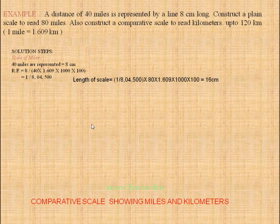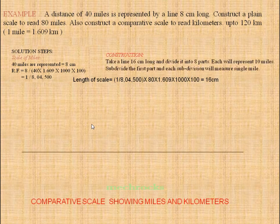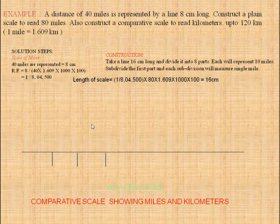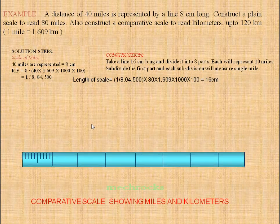We have a 16 cm line, and we divide it into 8 equal parts; each part represents 10 miles. You can take the downward height as 5 mm, 6 mm, or 10 mm as you prefer. Divide the first division into 10 equal parts; each division represents 1 mile. This is the mile scale.